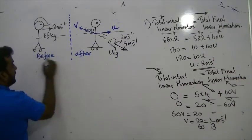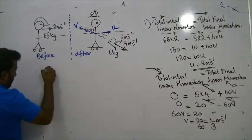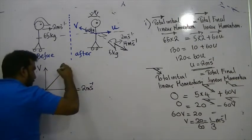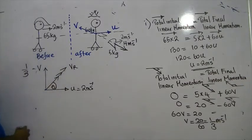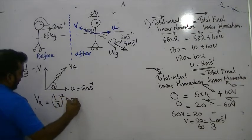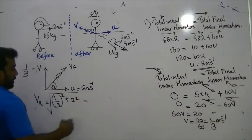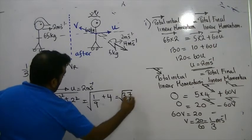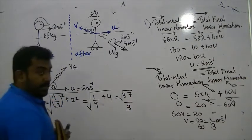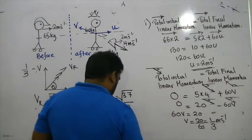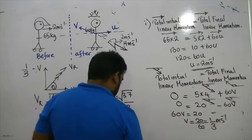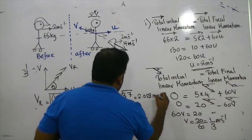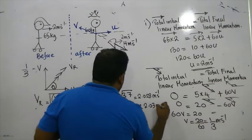Now we can find the resultant velocity using Pythagoras' theorem. Looking from the top, we can see V and U at right angles. U is 2 meters per second, V is 1/3 meters per second. Resultant velocity = √((1/3)² + 2²) = √(1/9 + 4) = √(37/9) = √37 / 3 ≈ 2.028 meters per second, so approximately 2.03 meters per second.